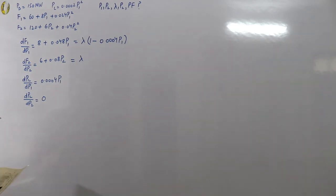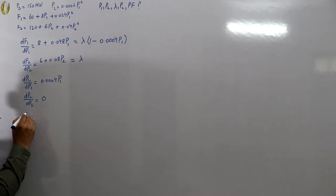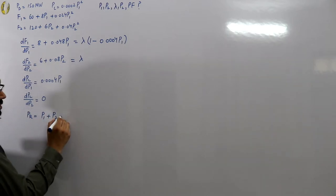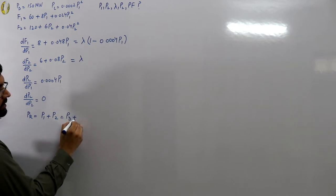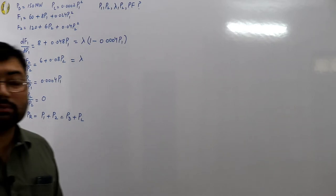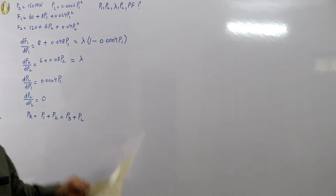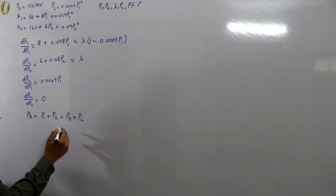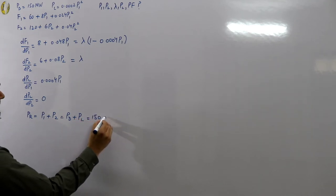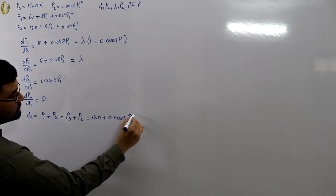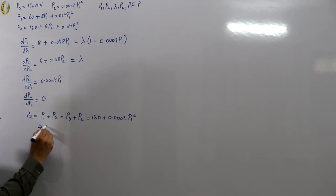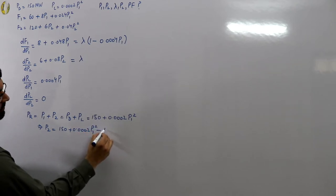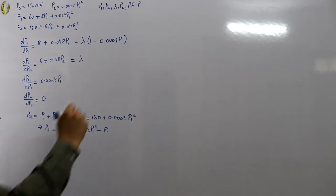We need to find lambda, P1, and P2. Since we have power losses, the power balance equation is P1 + P2 = power demand + power loss, i.e., P1 + P2 = 150 + 0.0002 P1 squared. From this we can express P2 = 150 + 0.0002 P1 squared − P1. Call this equation A, and the optimality condition for station 2 equation B.